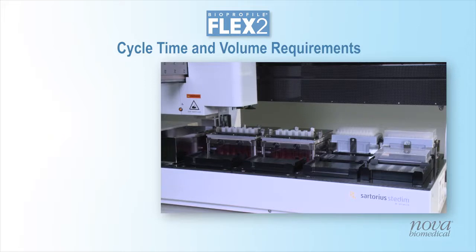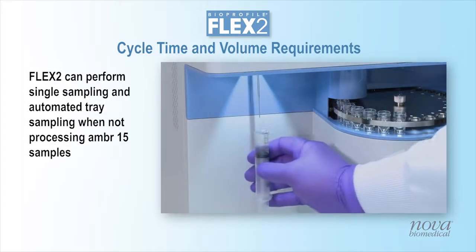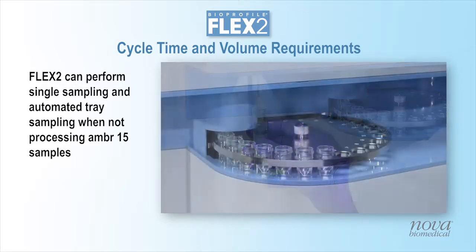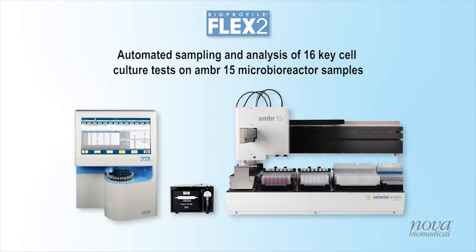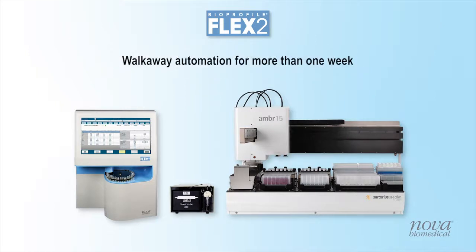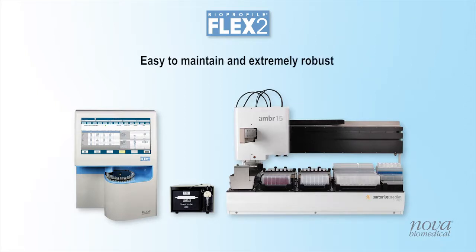Flex2's integration with AMBER15 allows for unprecedented automation. However, Flex2 can also be used for single sampling and tray sampling when not processing AMBER samples. Flex2 is the industry's only comprehensive 16-test cell culture analyzer with automated sampling from AMBER cell culture systems. Flex2's high-capacity reagents provide walk-away, automated analysis for more than one week. Flex2's low sample volumes enable daily sampling of AMBER15 cell culture systems while providing an instrument that is very easy to maintain and extremely robust. Flex2 enables customized feedback control for all measured tests with infinite possibilities for the most advanced process control strategies.